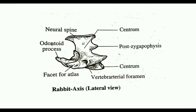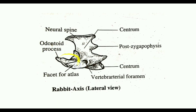The second cervical vertebra of rabbit is the axis. It has a broad centrum, and from this centrum projects a forward process called the odontoid process. The odontoid process articulates with the atlas, and this atlas-odontoid articulation acts as a pivot for the rotation of the head.